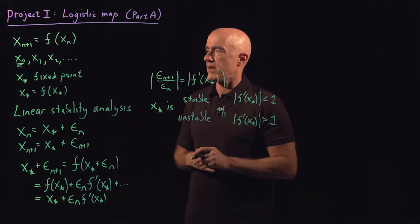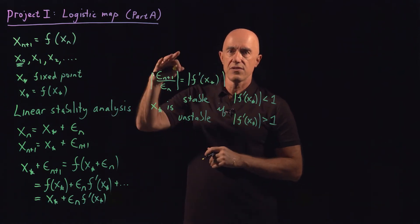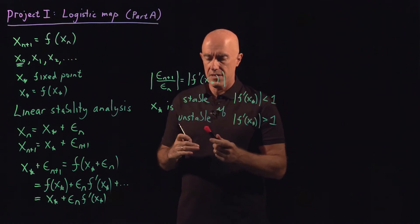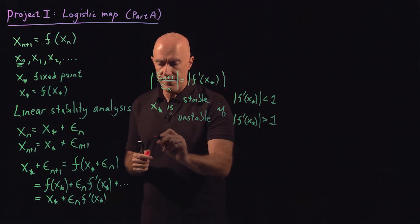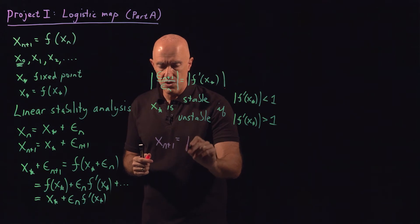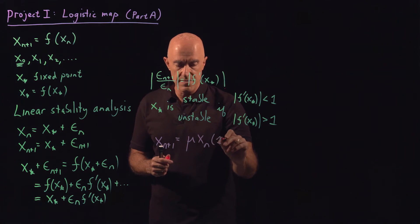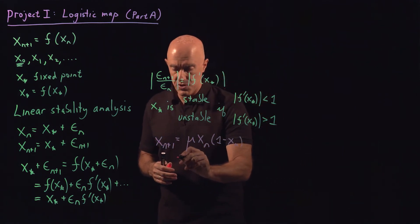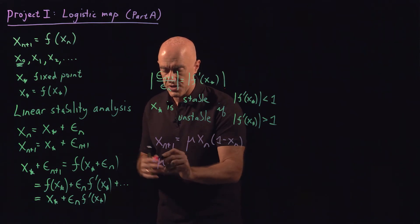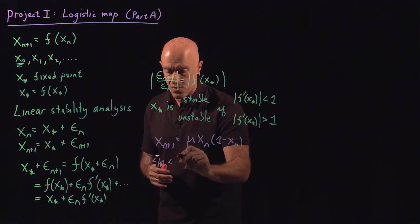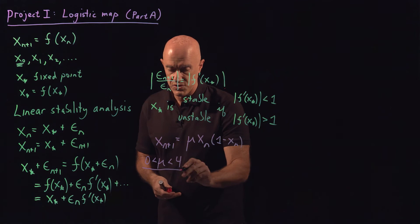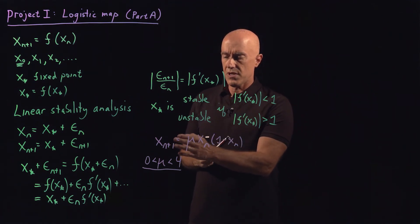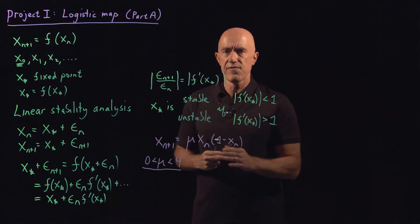So that's the general theory for a one-dimensional map: you can find fixed points and determine their stability. For your project, you're going to work with the logistic map: x_{n+1} equals mu times x_n times (1 minus x_n). It's a quadratic map with parameter mu, which we restrict to be between 0 and 4. The project is to compute the bifurcation diagram — the behavior of the iterates as mu varies.